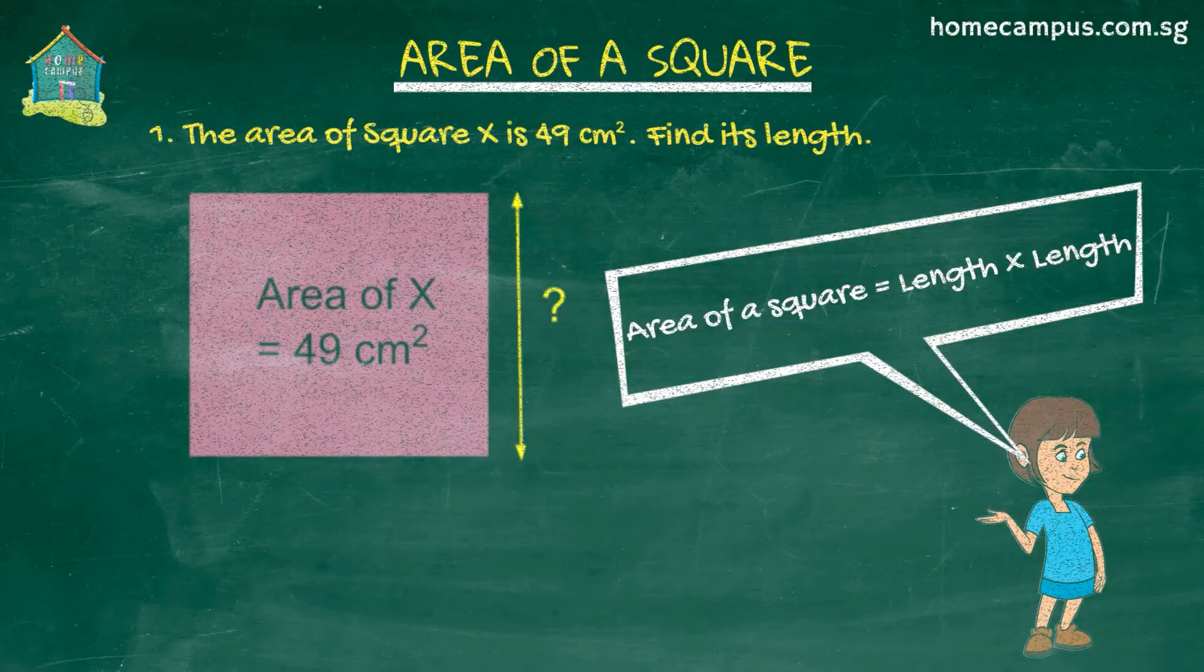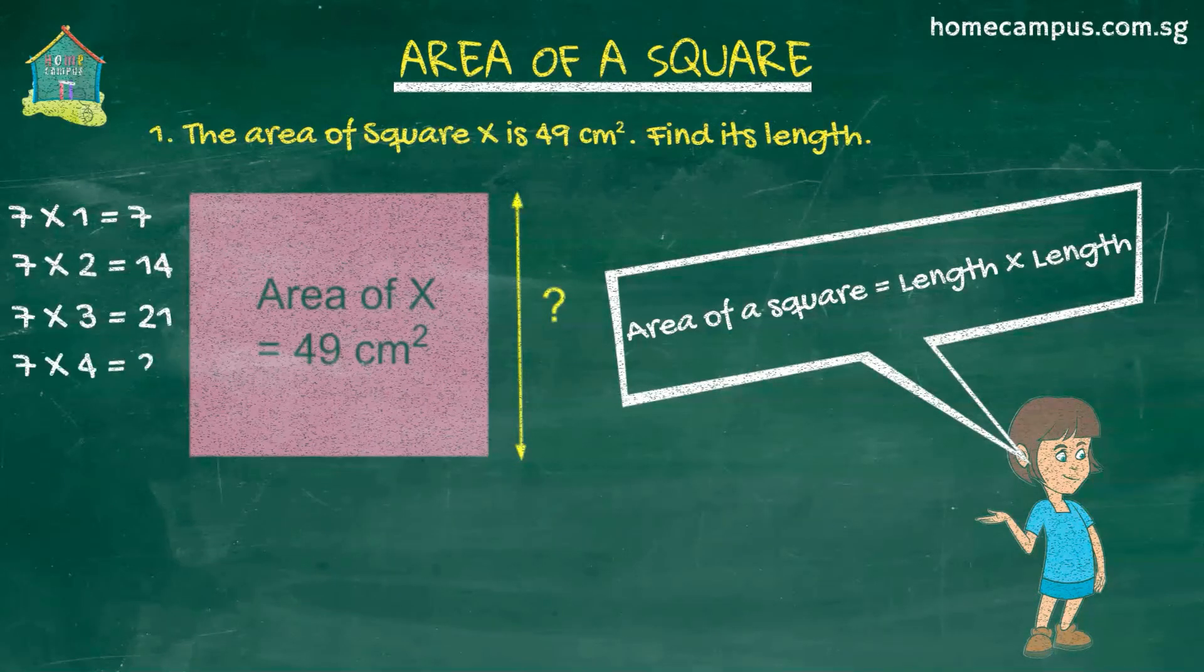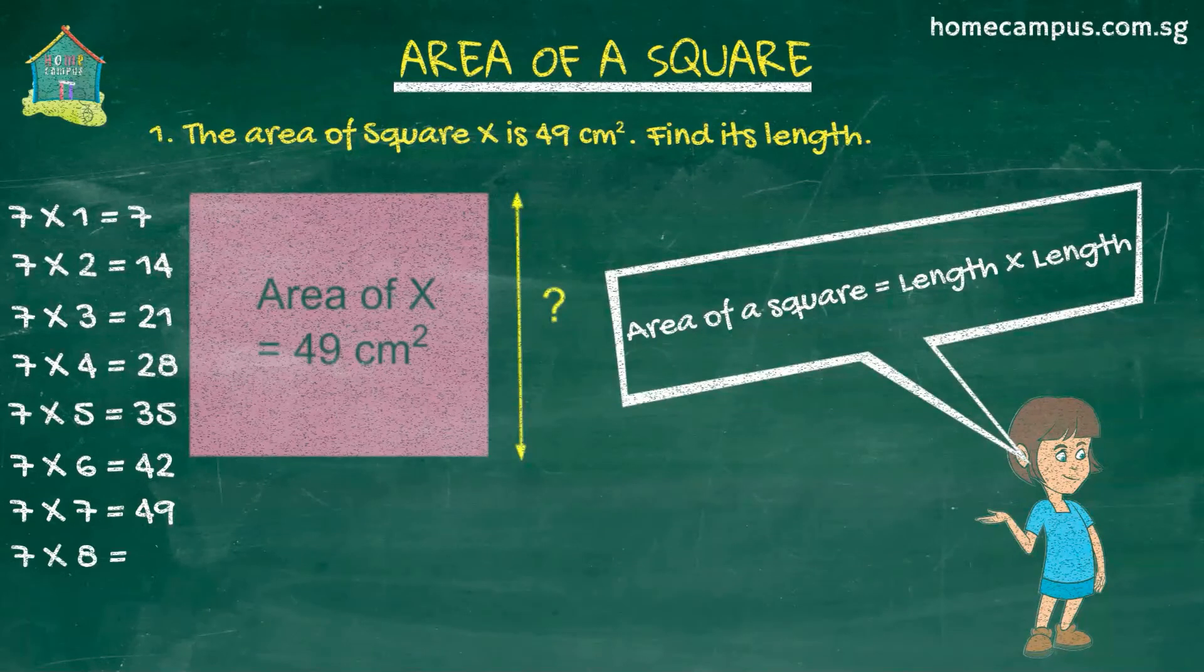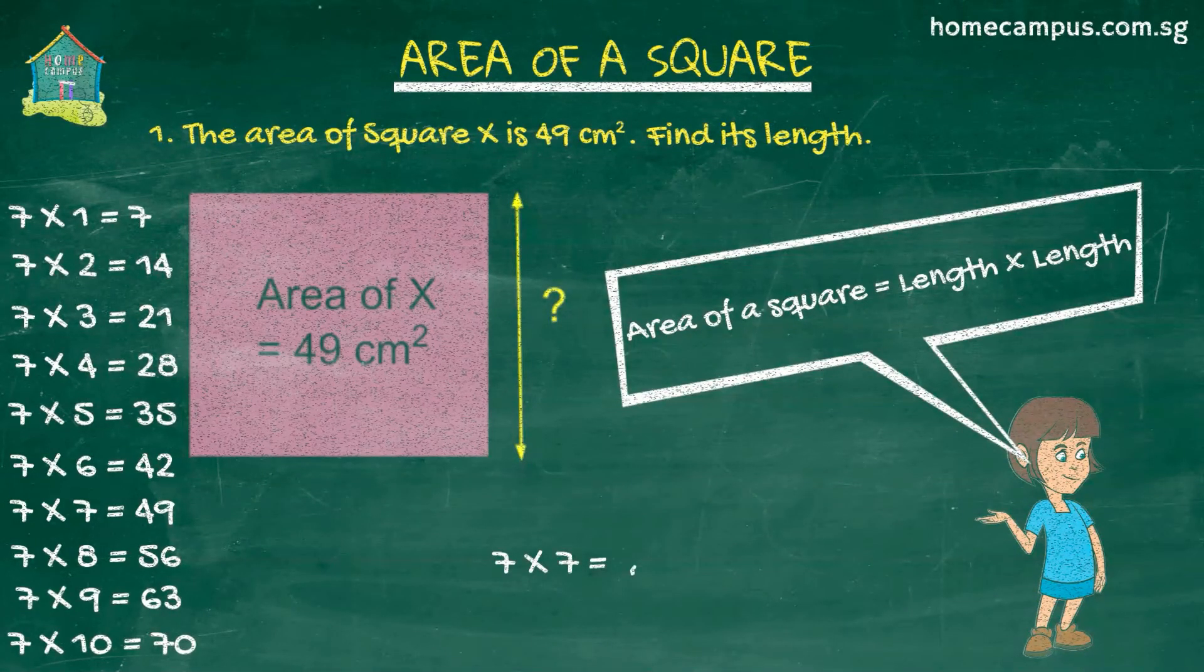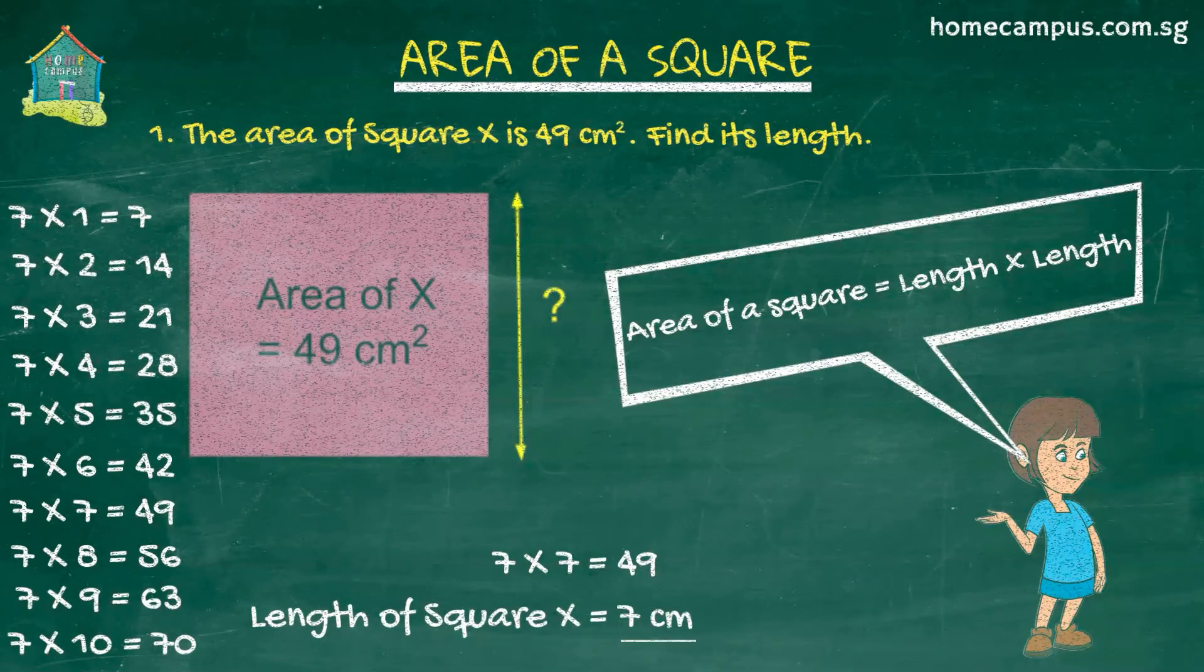Now which number when multiplied by itself gives us 49? To find that out we will need to recall the times tables. We get 49 when we multiply 7 by itself. So square X has a length of 7 centimeters. And that's our answer.